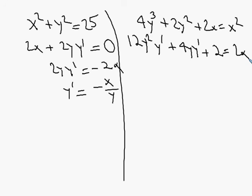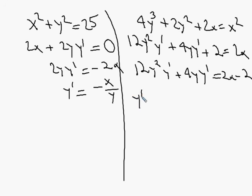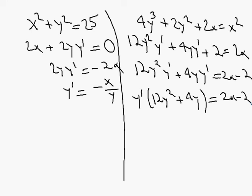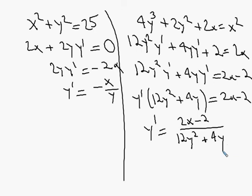To solve for y prime, first subtract 2: 12y²·y' + 4y·y' = 2x − 2. Then factor out y prime: y'(12y² + 4y) = 2x − 2. Dividing both sides gives y' = (2x − 2)/(12y² + 4y). That is dy/dx.